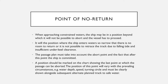In that case, we have the abort and contingency point marked on the chart. However, when approaching constrained waters, the ship may be in a position beyond which it will not be possible to abort, and the vessel has to proceed. That will be the position where the ship will enter waters so narrow that there is no room to return, or it is not possible to retrace the track due to a falling tide and insufficient underkeel clearance.